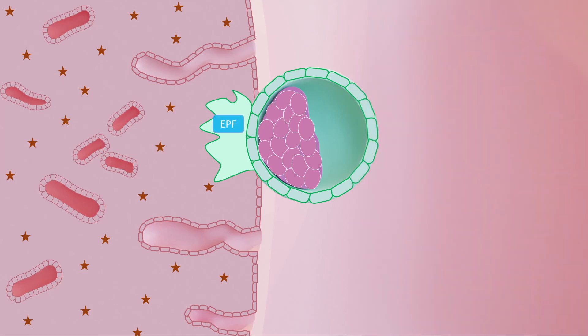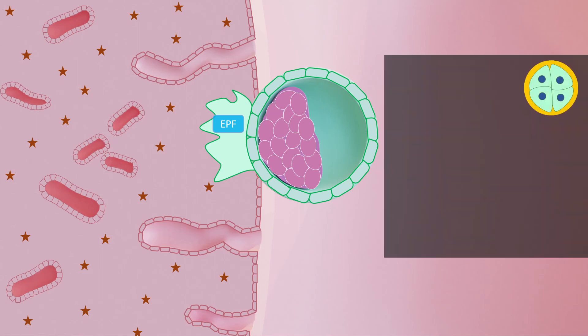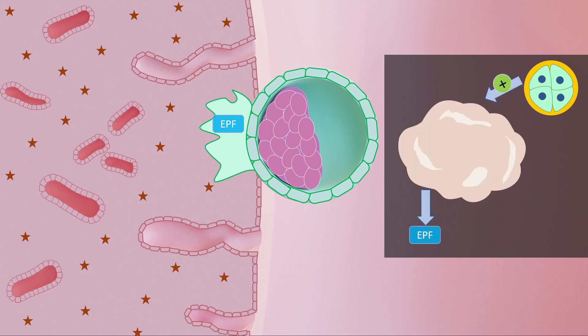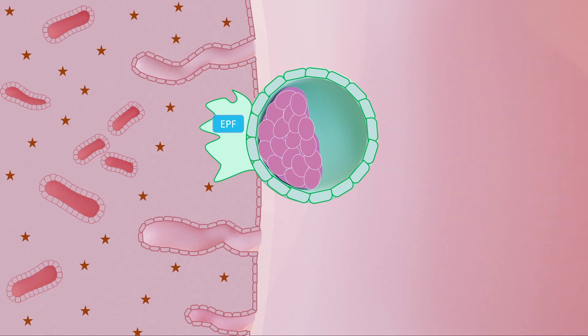This early embryo also secretes the early pregnancy factor that can be detected as early as about 36 to 48 hours. Actually, at about 4 cell stage, this early embryo stimulates the ovary that produces the early pregnancy factor. But later on, the embryo produces its own EPF. Both this EPF and the HCG are immunosuppressive and they prevent the rejection of the embryo as its genetic makeup is very different from that of the mother's.